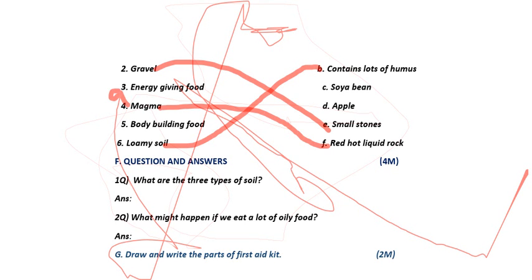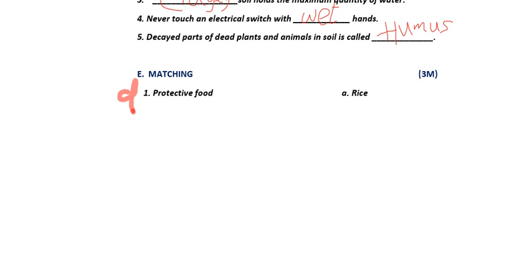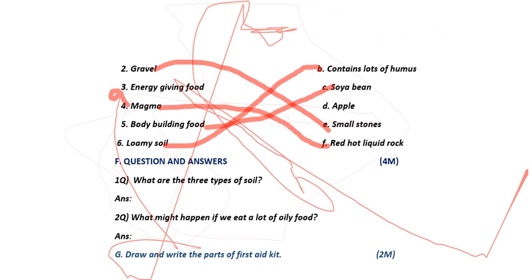Body building food — the answer is soybean, which is option C. Protective food is apple, option D. So all the matching answers are: first is D, second is E, third is A, fourth is F, fifth is C, sixth is B. Let me repeat: D, E, A, F, C, B are your answers.